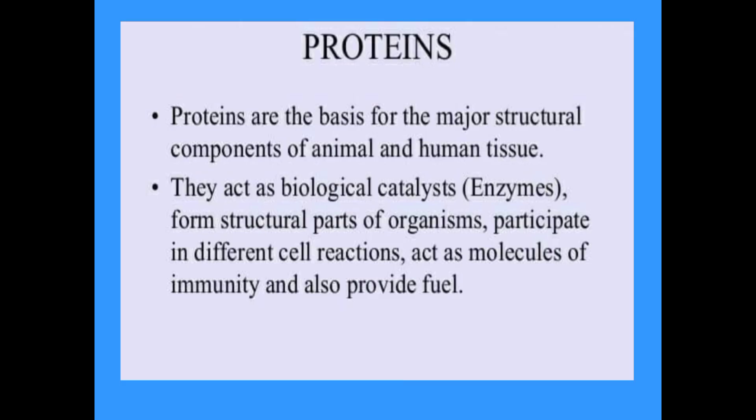Proteins are polymers of amino acids — compounds containing carbon, nitrogen, oxygen, and hydrogen. The number of amino acids varies from a few to 3,000 or even more in different proteins. Proteins are the most abundant organic compounds found in cells, comprising over 50% of the total dry weight. They are present in all types of cells and in all parts of the cell.